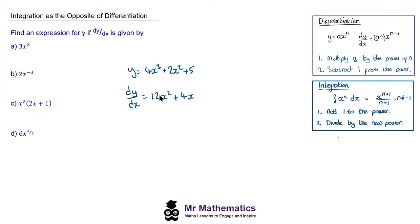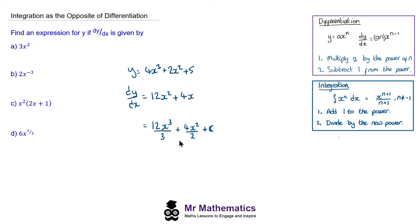We'll begin by integrating this equation. For 12x², we add 1 to the power to get cubed, then divide by the new power which is 3. For 4x, we add 1 to the power — currently x to the 1 — so it becomes x to the 2, and we divide by the new power 2. To get back the 5, we add a constant term, which comes from the constant that was dropped when differentiating. Simplifying: 12 divided by 3 is 4, giving 4x³, and 4 divided by 2 is 2, giving 2x² plus c. So we've gone back from the gradient function to y using the process of integration.